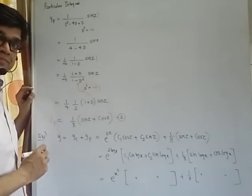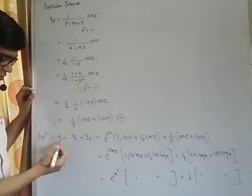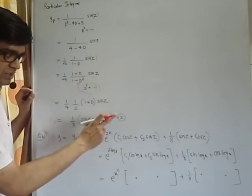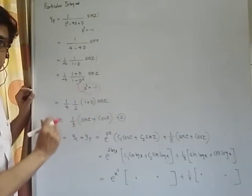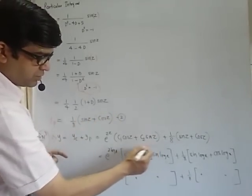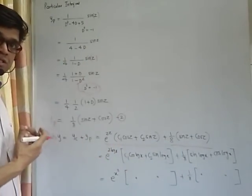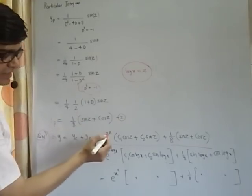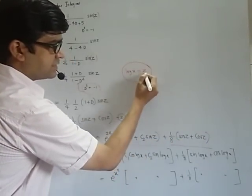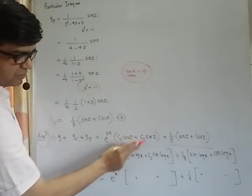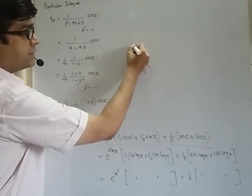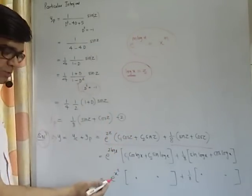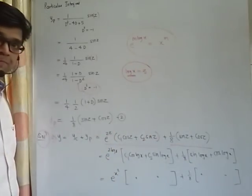This is particular integral. The complete solution is given by y equals yc plus yp. The complementary function which we got in equation 1 plus yp which is this particular integral. Now remember we had substituted log x equals z. So in the final answer, wherever you see z, you replace that z by log x. Everywhere z is replaced by log x. e raised to m into log x equals x raised to m. Using this formula, e raised to 2 log x we get x square. Remaining part same. Hope you understand Cauchy's differential equation.